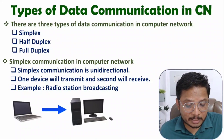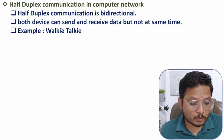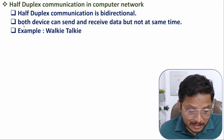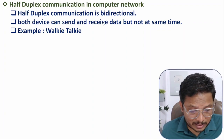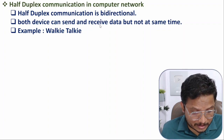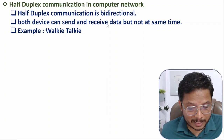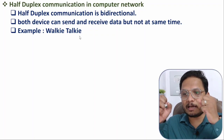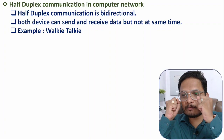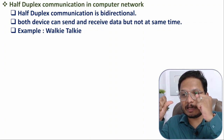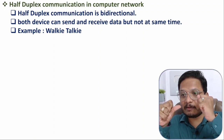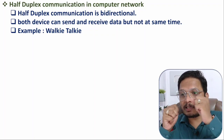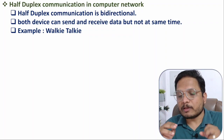Half duplex communication is bidirectional — both transmitter and receiver can send data to each other, and both can receive data from each other, but not at the same time. For example, with walkie-talkie: right now device one is the transmitter sending data to the receiver, but if the receiver wants to transmit data simultaneously, that is not possible.